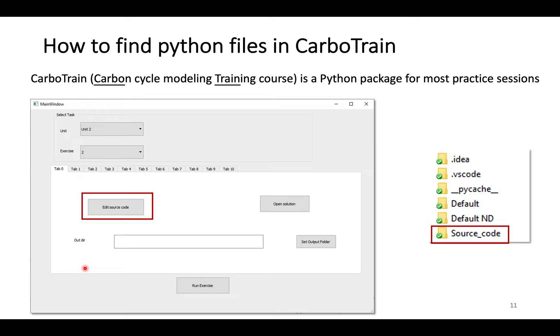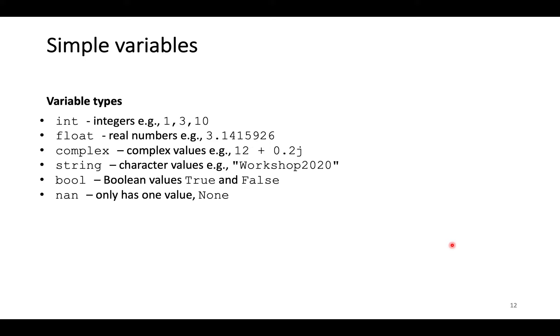In this training course, we will use a Python package called CarbonTree for most practices. More detailed introduction of CarbonTree is available in the next lecture. All Python source code is embedded, and CarbonTree provides an interface to read the code like this button. We can also open the source code in the file folder. All Python code is stored in a file named source code.